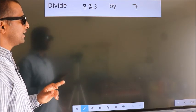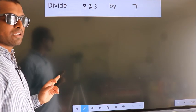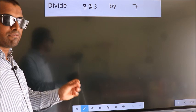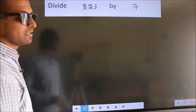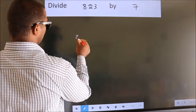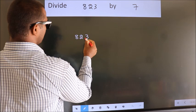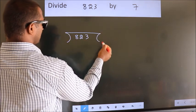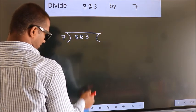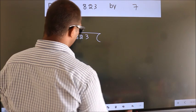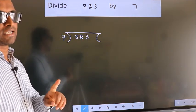Divide 823 by 7. To do this division, we should frame it in this way. 823 here, 7 here. This is your step 1.